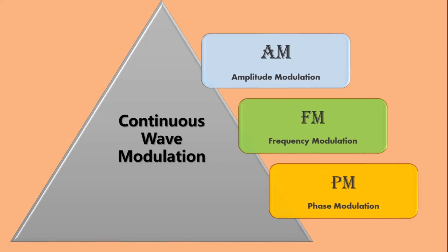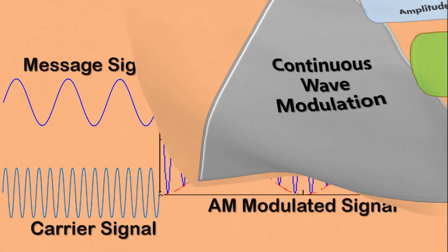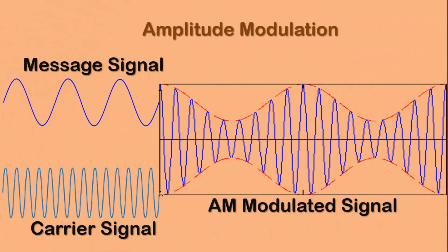In case of amplitude modulation, the amplitude of the carrier signal changes according to the message signal. After modulation we get an amplitude modulated signal where the change of amplitude is quite clearly visible.